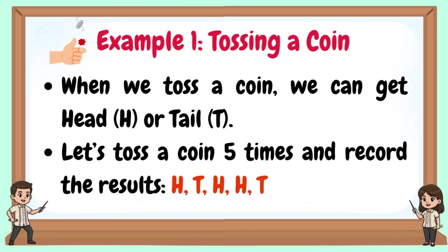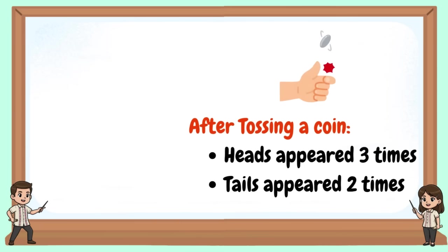The results are: head, tail, head, head, tail. After tossing a coin, heads appeared three times and tails appeared two times.